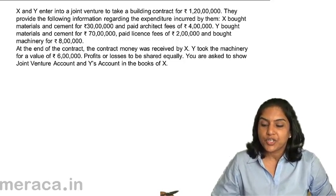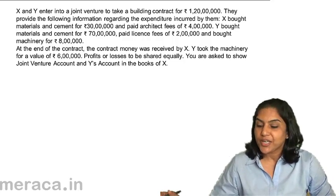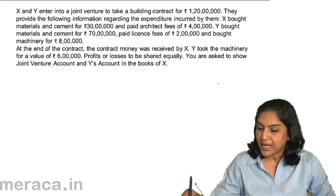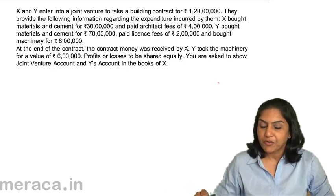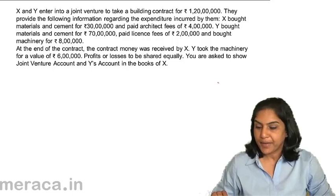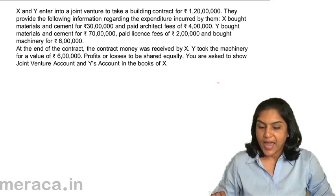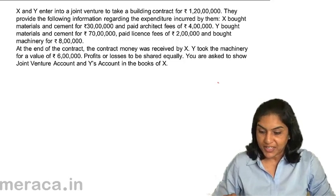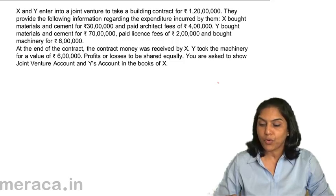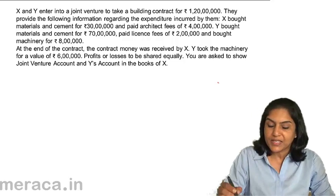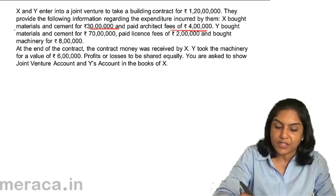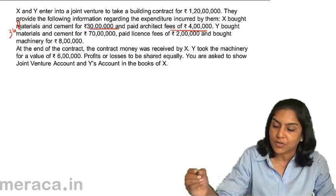X and Y enter into a joint venture to take a building contract for 1 crore 20 lakhs. They provide the following information regarding the expenditure incurred by them. X bought materials and cement for 30 lakhs and paid architect fees of 4 lakhs, so X has incurred a total expense of 34 lakhs.